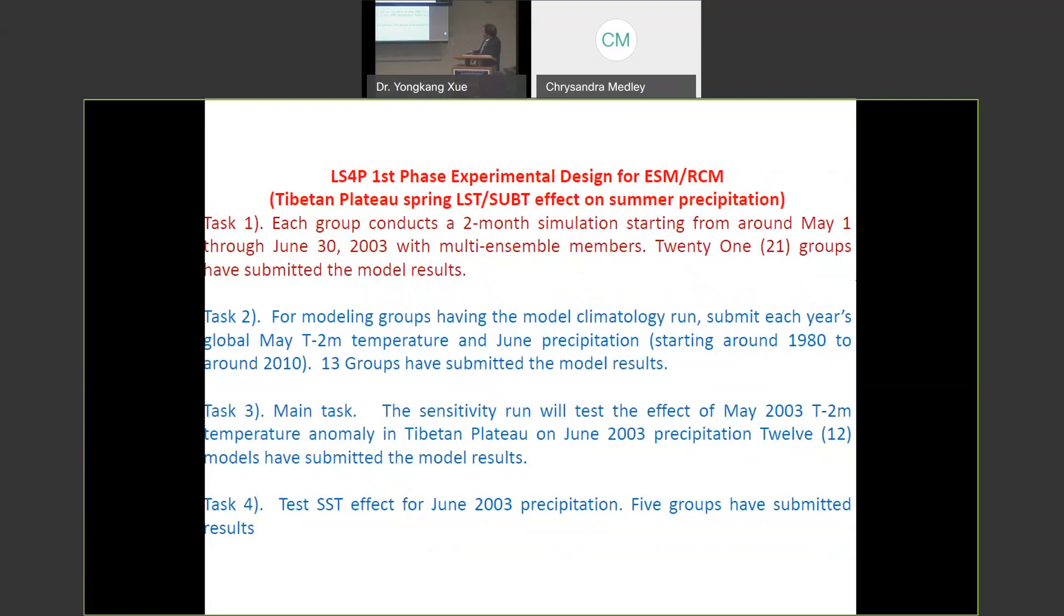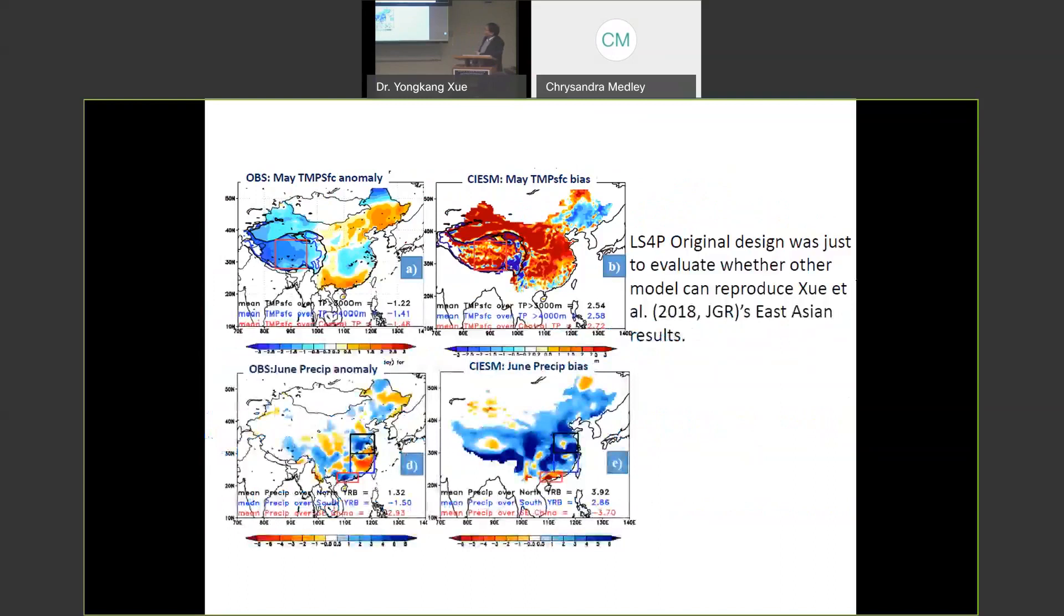So there's several tasks in these experiments. First, for first phase, for Tibetan Plateau, first, each group run 2003, May to June 2003. So to see their model bias, because, as I said, the original thinking is to try to reproduce. So we want to see if our group's results can be reproduced. So we want to see each model, their bias. If every model has no bias in Tibetan Plateau, then we have no need to do the experiment, because it's perfect. But I'm pretty sure every model has bigger bias in mountain, Tibetan Plateau, and Rocky Mountain. And I told them, you should not feel shame if your model, ECMWF, you should not feel shame if you have larger bias. The larger the bias, the better.